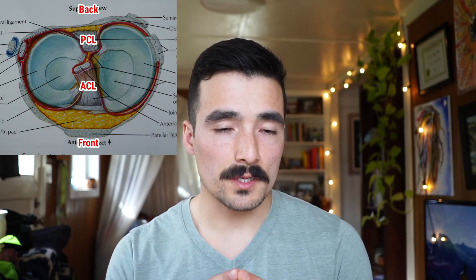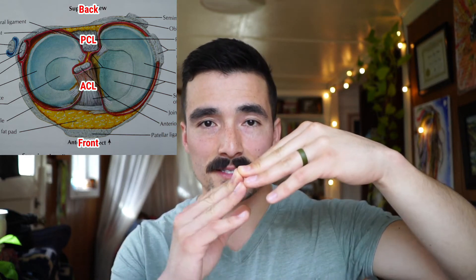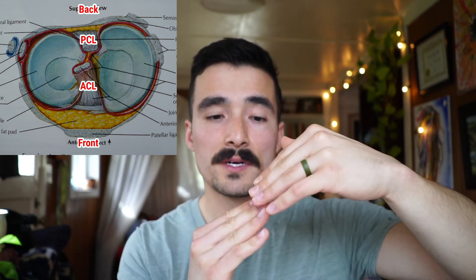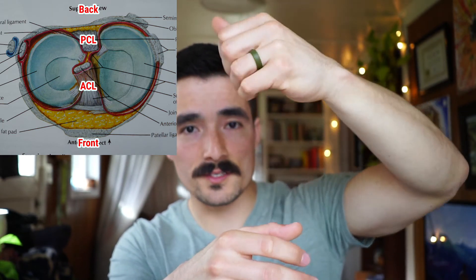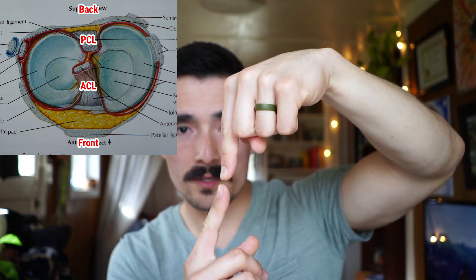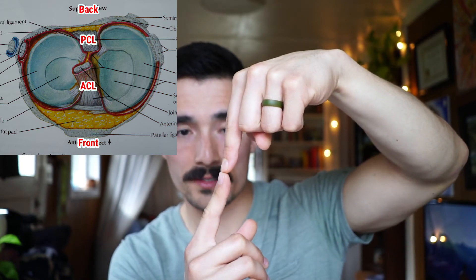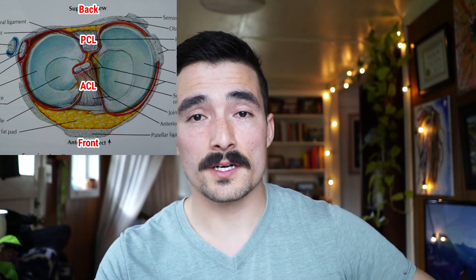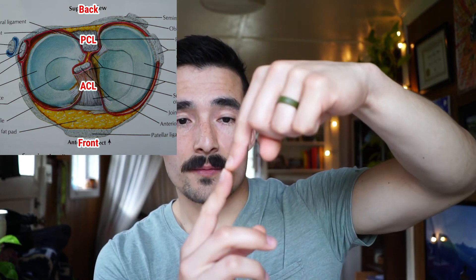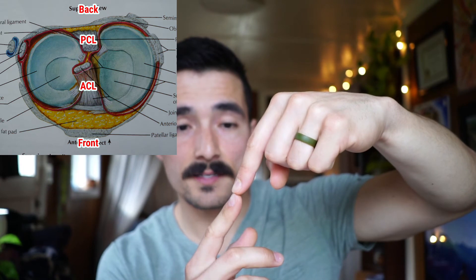What exactly does the ACL do? The ACL is most commonly known for stabilizing extension. When you extend the leg, the tibia wants to slide forward on the femur, and the ACL prevents that anterior translation of the tibia. The PCL is essentially the opposite — it sits in the back and prevents the tibia from sliding backward, and it also aids in flexion of the knee.